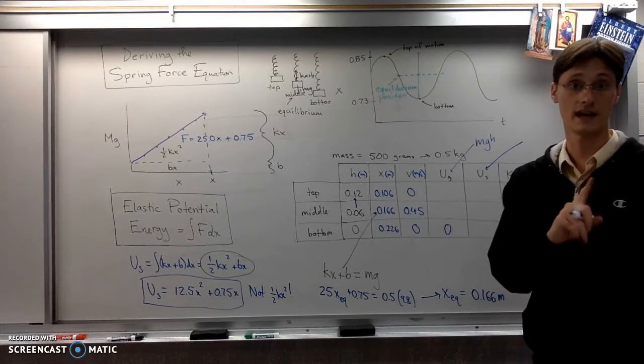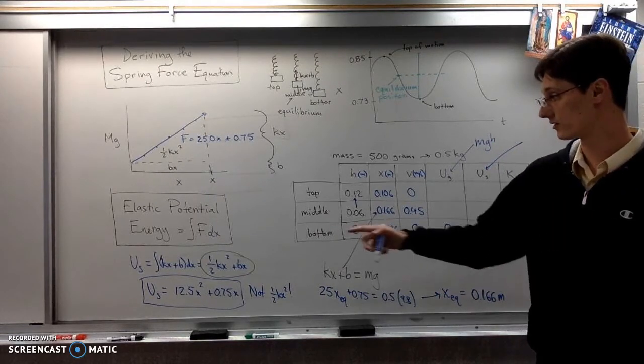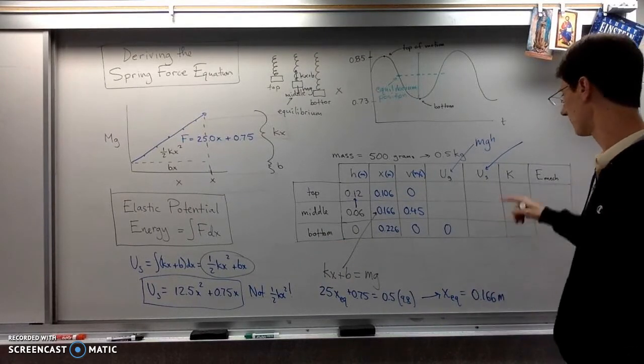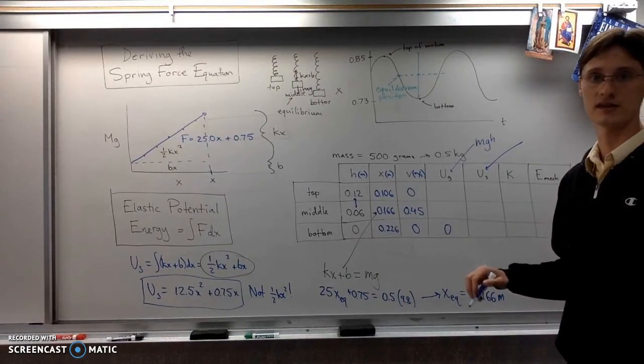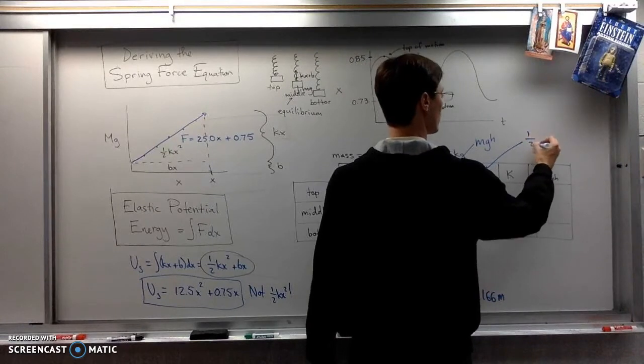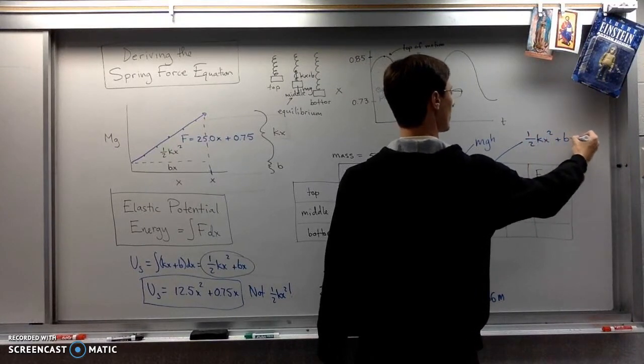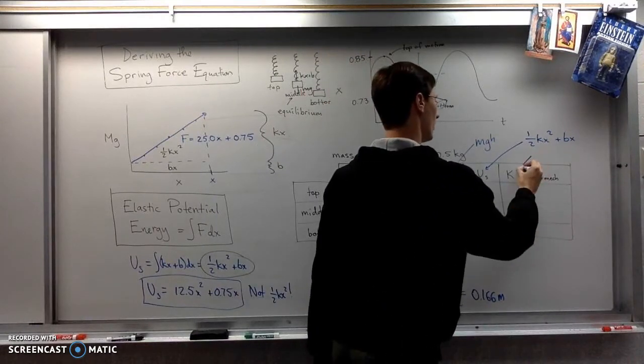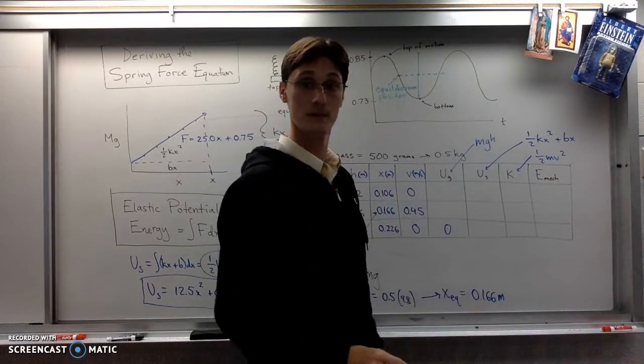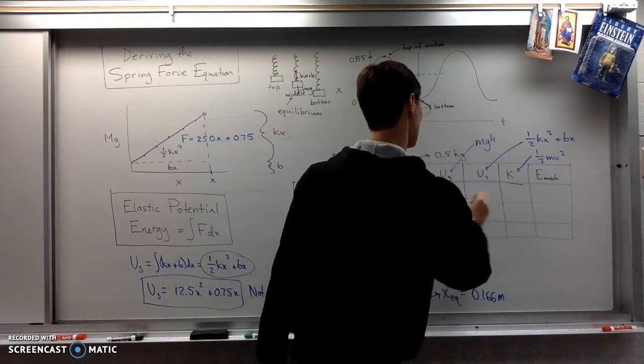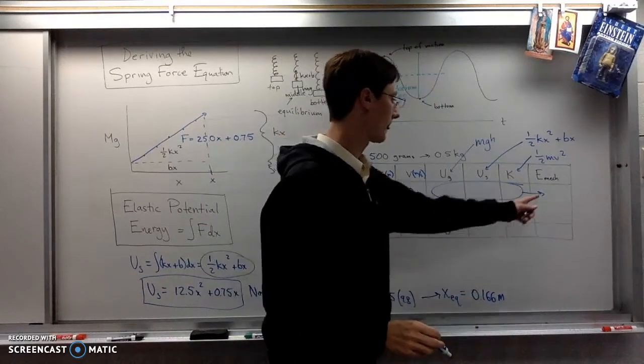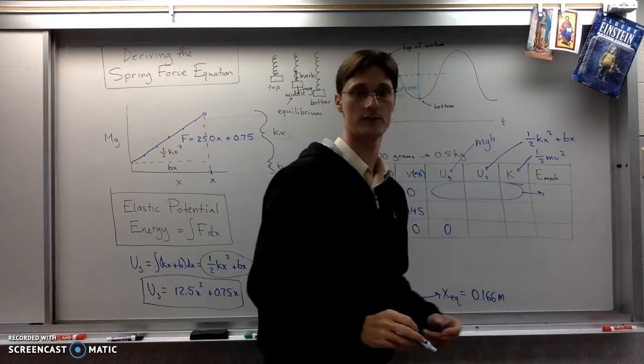Elastic potential energy. Don't use one-half kx squared. Use that one, one-half kx squared plus Bx. If you leave out the Bx, you'll have really stupid values there and it will not work out the mechanical energy's conserved. So you do have to make sure to use the correct potential energy function. All right, and then of course we have one-half Mv squared. And then mechanical energy is just these three added up.